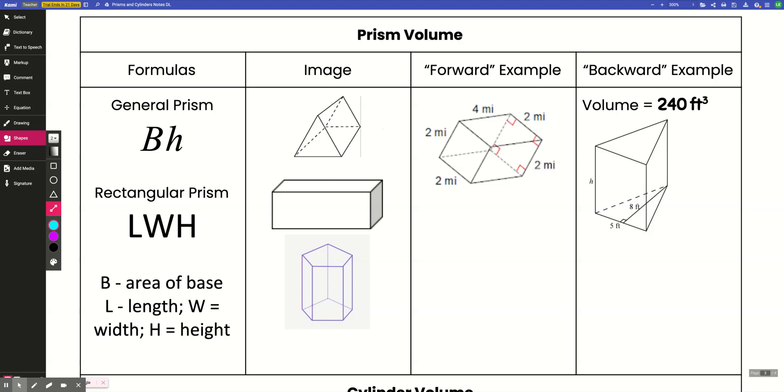So for prisms, there is a general formula for the volume of a prism, and it is capital BH, where capital B is the area of the base shape and H is the height of the prism.